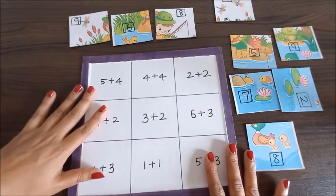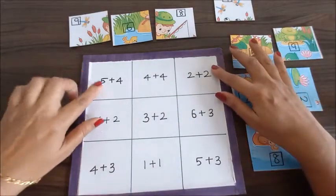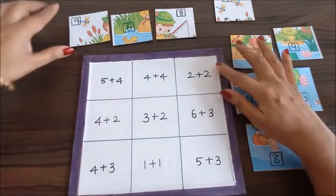5 plus 4 is 9. So you can see on this picture the number is 9, so we'll put it here.